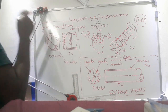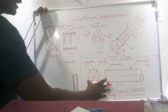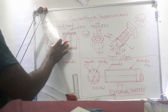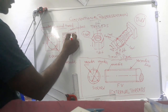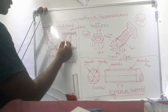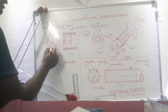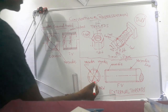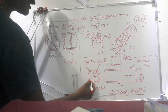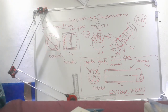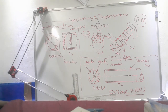That is the main difference between external and internal conventional representation of screw thread. In the front view, the outer black line is the major diameter, whereas the inner line is the minor diameter. In the side view for internal thread, the full circle represents the minor diameter and the 3/4 circle represents the major diameter. For external thread, the full circle represents the major diameter and the 3/4 circle represents the minor diameter.